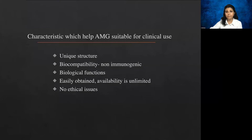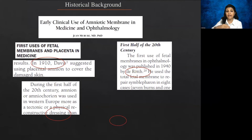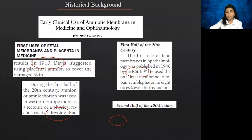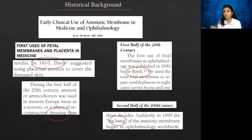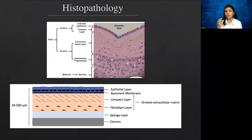Historically, Dr. Davis used it in 1910 as a covering for burn patients. In ophthalmology, Dr. Roth first used it in 1940 to treat severe symblepharon in burn patients — removing the symblepharon and using amniotic membrane instead of peritoneum with remarkable results. It then fell out of use because only freshly prepared membrane was available and infection transmission was a risk. Later protocols emerged and it came back strongly, generating thousands of papers on its benefits for the ocular surface.